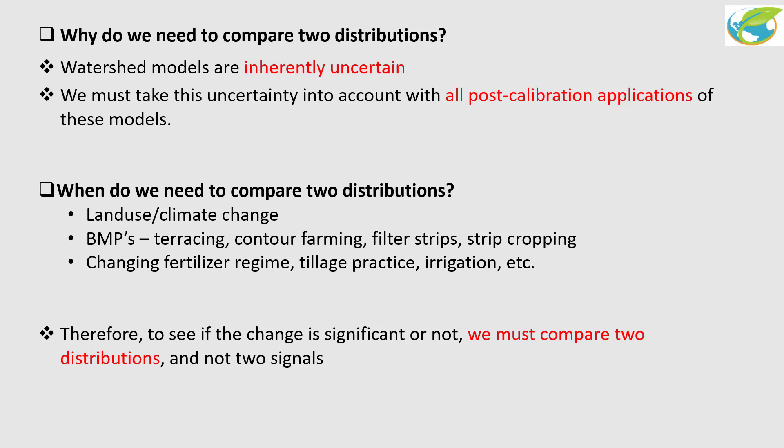We need to compare two distributions when you do analysis of land use or climate change, when you run BMPs like terracing or contour farming, when you change fertilizer regime, tillage practice, irrigation, and so on. You apply these kinds of management operations and you would like to see if they make any significant difference to discharge, sediment, nitrate, and so on.